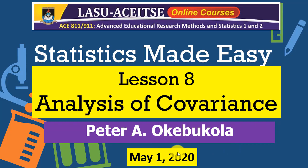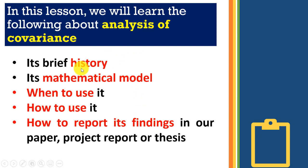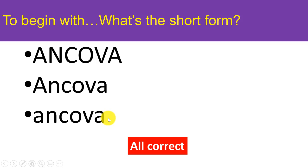Hello everyone, we're now in the first day of May, and today we're taking on lesson number eight in our series 'Statistics Made Easy.' Today we'll learn about analysis of covariance. In the last lesson, lesson seven, we learned how to conduct a multi-way ANOVA. Today we're looking at analysis of covariance: its history, mathematical model, when to use it, how to use it, and how to report its findings.